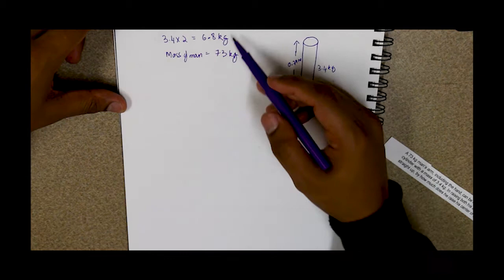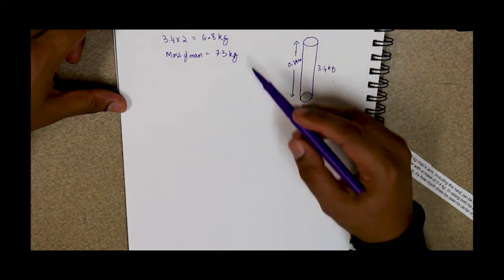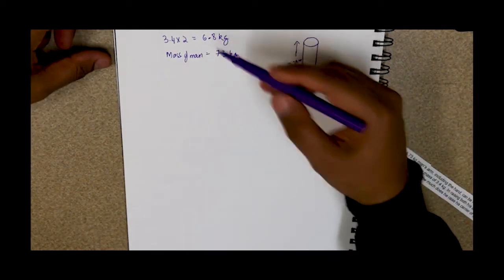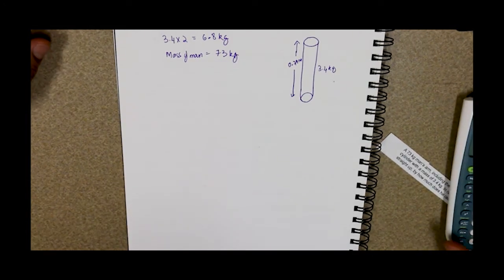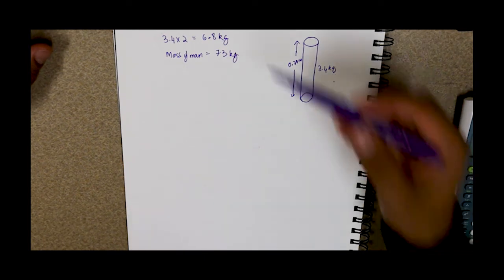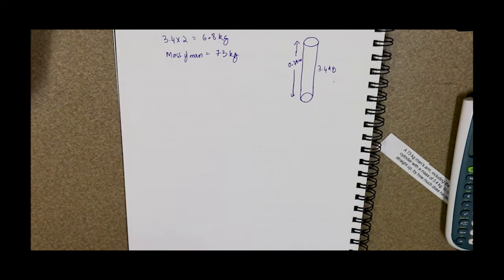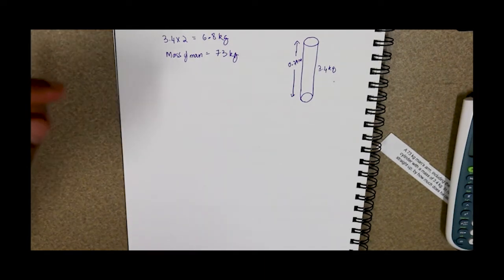Now, what fraction of his weight is in his arms? We do 6.8 divided by 73, the mass of his arms divided by the mass of his total body, including his arms.